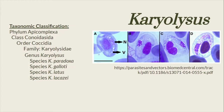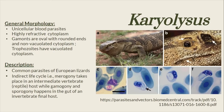Next, we have the genus Cariolisus. Species from the genus Cariolisus are common parasites of European lizards and they have an indirect life cycle. Merogony takes place in an intermediate vertebrate host, more common in reptiles, while gamogony and sporogony happen in the gut of an invertebrate final host. As for their morphology, they are unicellular blood parasites with highly refractive cytoplasm. As gamonts, they are oval with rounded ends and non-vacuolated cytoplasm, while as trophozoites they have vacuolated cytoplasm.